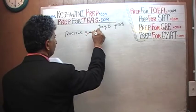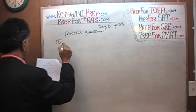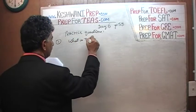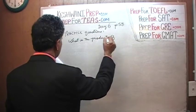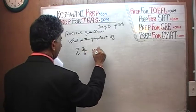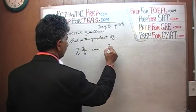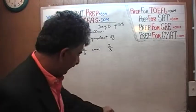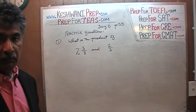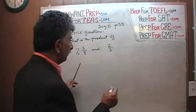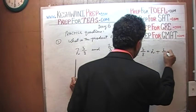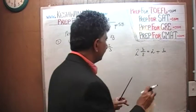Practice question number one says: what is the product of two and three-eighths and two-thirds? The very first thing we have to figure out is what two and three-eighths is in terms of an improper fraction, as opposed to a mixed fraction. Two and three-eighths is the same as two plus three-eighths.